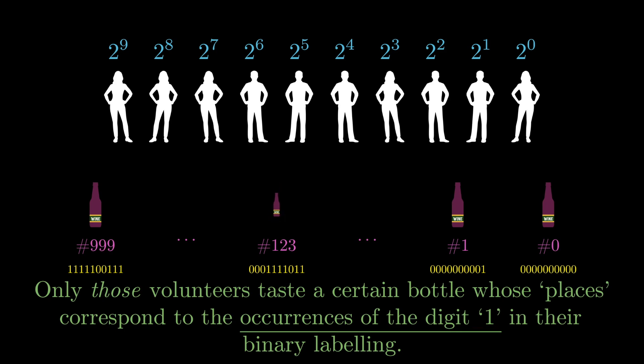So the 123rd bottle for example would be labeled 0001110111 and we keep the leading zeros, that is the first three zeros, because we have a total of 10 digits, that is 10 volunteers to account for. So maybe you can see where this is going but just to make it more explicit, finally what we do is we make those volunteers taste a certain bottle whose places correspond to the occurrences of the digit one. Okay, so what does that mouthful of a sentence actually mean? Well if you consider the hundred and twenty-third bottle for example, it is represented as 0001110111, which means that its one's place value is one so it's tasted by the one's place volunteer, its two's place value is also one so it's tasted by the two's place volunteer, its four's place value is zero which means it is not tasted by the four's place volunteer, its eighth place value is one so it's tasted by the eighth place volunteer and so on. So it's also tasted by the 16th place volunteer, 32's place volunteer, 64's place volunteer and that's it. It's not tasted by any of the other volunteers.